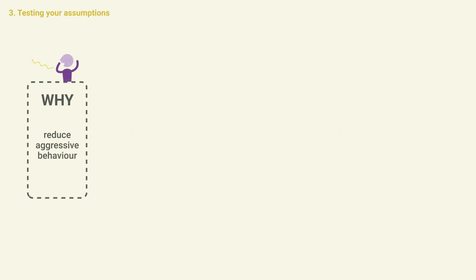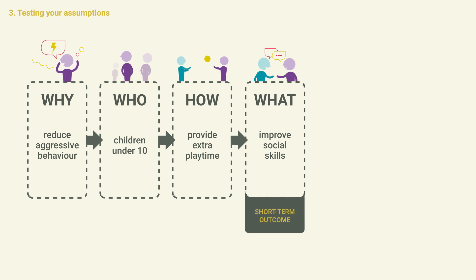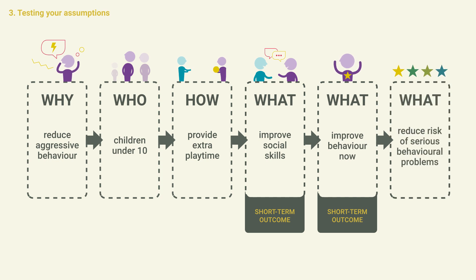Let's imagine an intervention that aims to reduce aggressive behavior in children under the age of 10. This intervention works by spotting children showing signs of aggression and giving them extra playtime. The idea is that this will give them more time to learn better social skills, which will improve their behavior now, and reduce the risk of serious behavioral problems later.